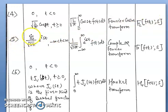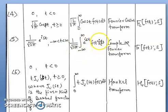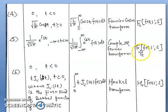The next case uses the kernel (1/√(2π)) e^(ist) for minus infinity less than t less than infinity. The integral becomes (1/√(2π)) times the integral from minus infinity to infinity of e^(ist) f(t) dt. This integral is known as the complex Fourier transform, denoted by F{f(t); s}.